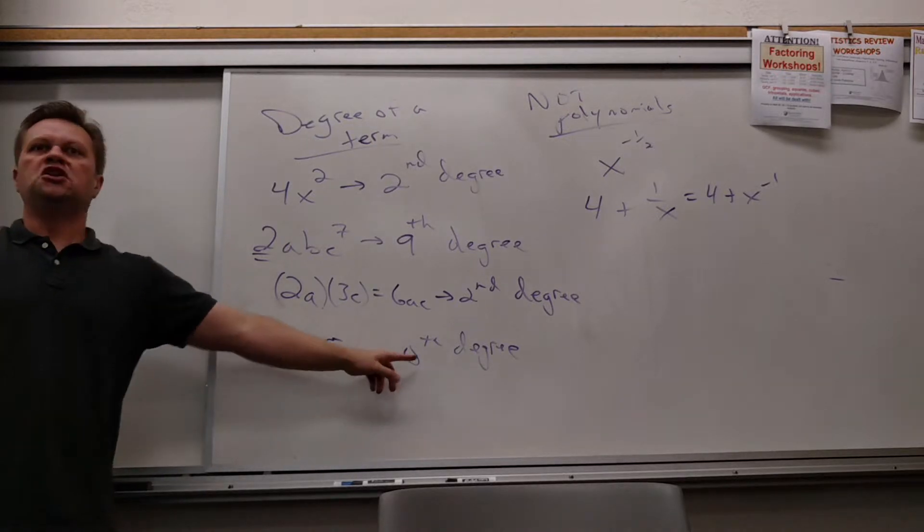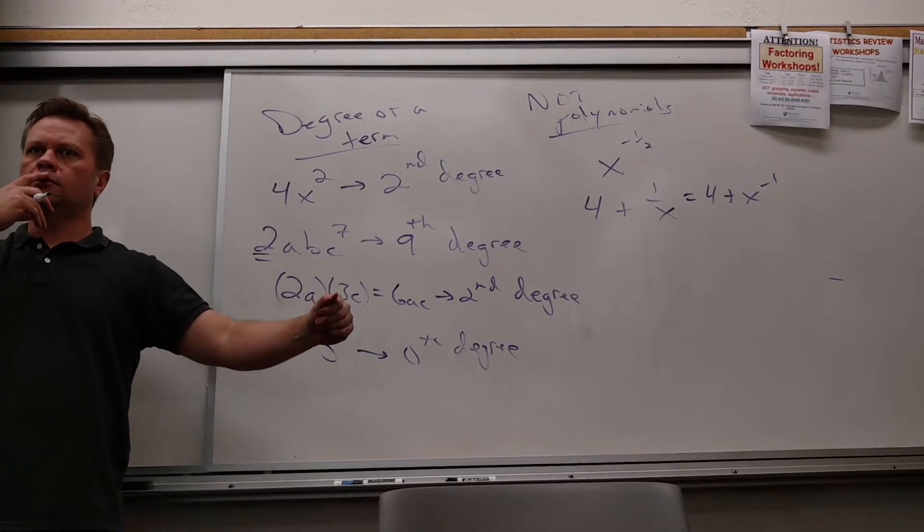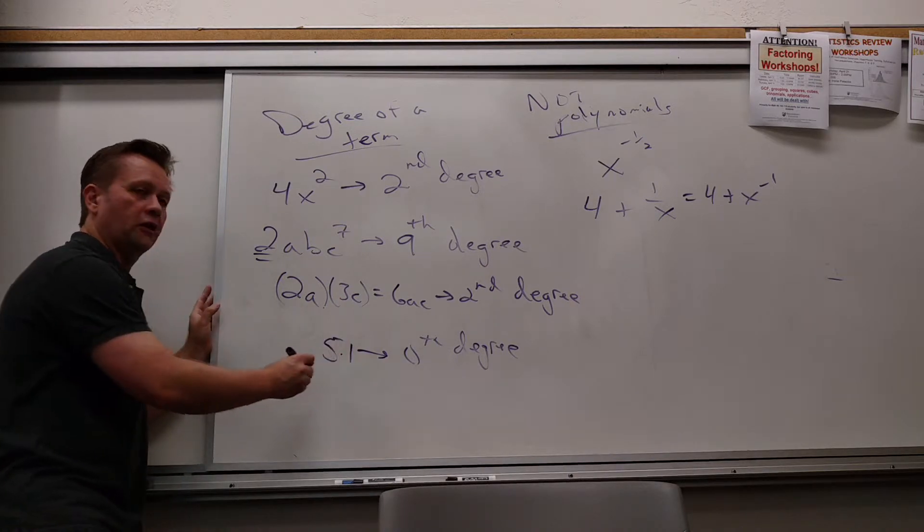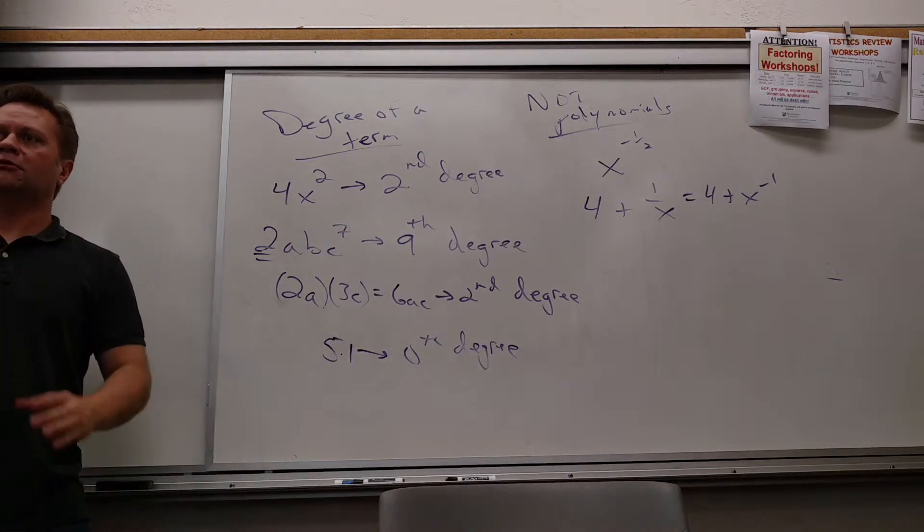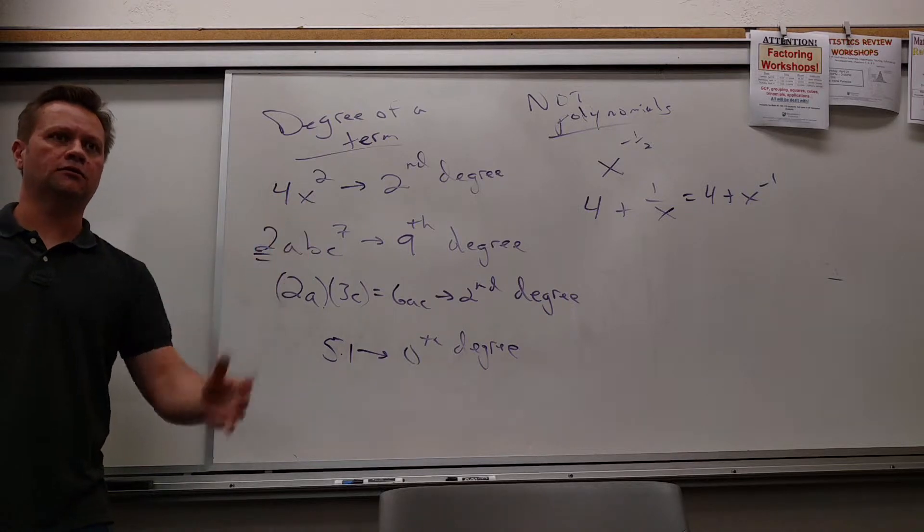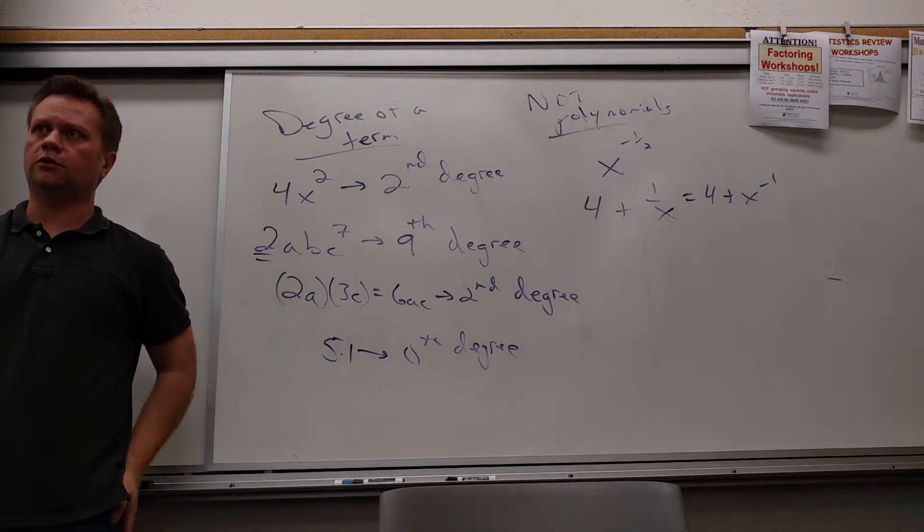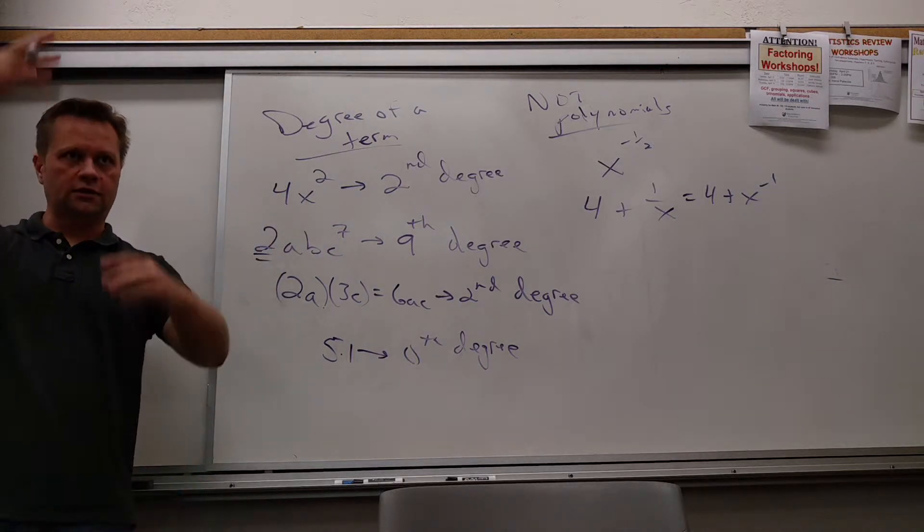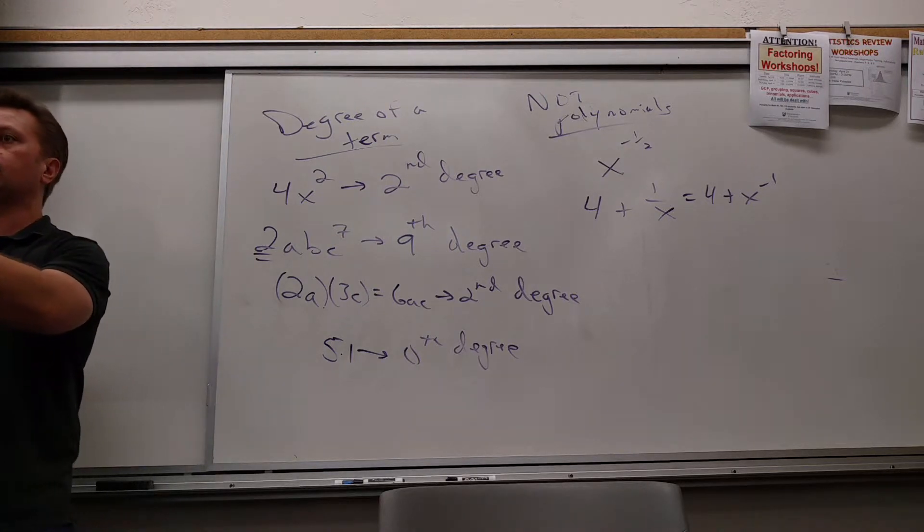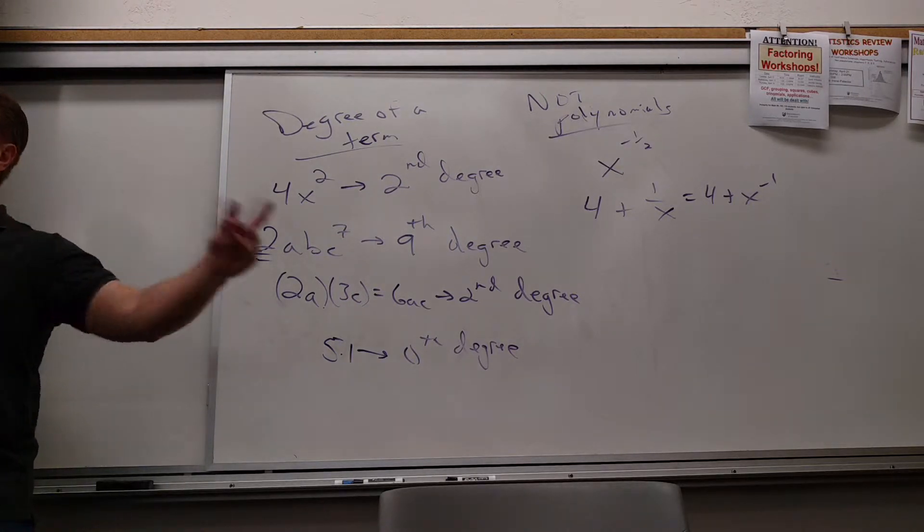So this is sort of related to how quickly the thing would grow as I let my variable change. I don't care what variable I let change. Five is five. It ain't growing. It's a zero degree. How many variables do I see? None. In fact, this is five times one, right? This is going to freak you out a little bit more, but what is one x to the zero? Isn't x to the zero one? We talked about that last time. Yes. So then you can say, if you write it like that, you can say it is the power. The power is zero, so it's a zero degree.